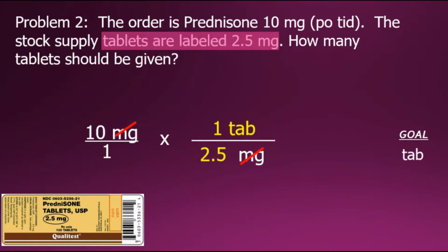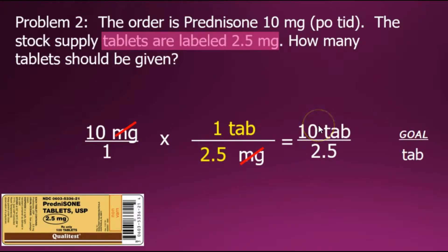Simplifying further, we'll multiply numerators and multiply denominators for the results shown. Last step: determine the quotient by dividing 10 by 2.5 for a final answer of 4 tablets.